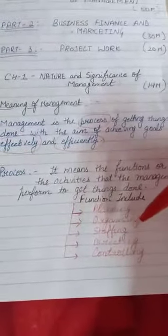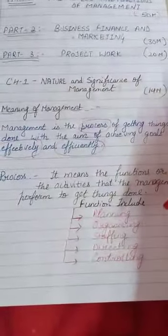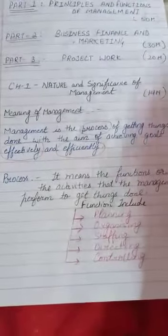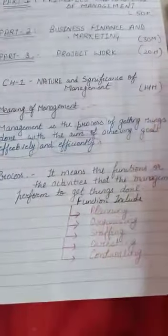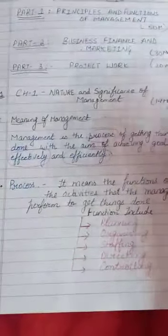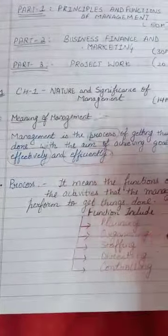What functions are there? A manager does what? First, he forms his plans, then he makes them execute, then he makes it a requirement for his staff. Then he directs how to achieve his plans, and then he makes it controlling. These all things we will discuss later in a subsequent chapter.